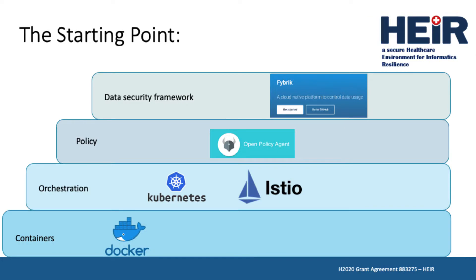We based the policy-aware framework on IBM's open-source Fabric project, which uses open-source components such as the Open Policy Agent, known as OPA, to handle policy definition and decision, and Kubernetes, Istio, and Docker containers.